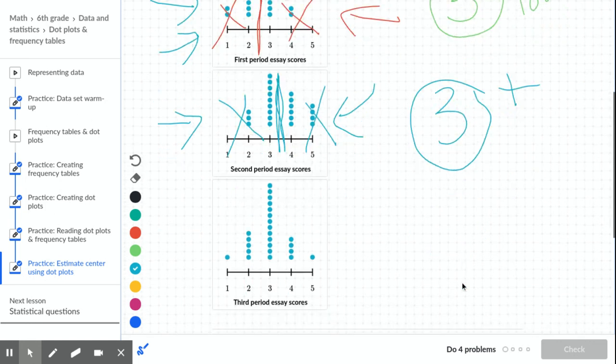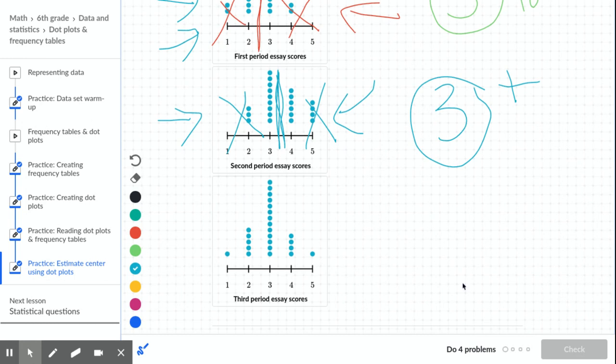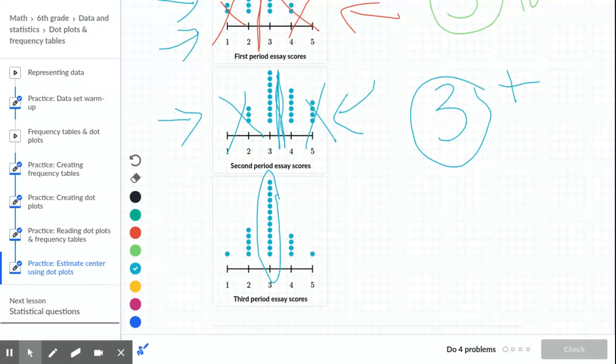And then the last one, it looks like this one. I am pretty confident just looking at this one that the typical score is a three. It's the tallest bar. It's like right in the middle. There's about the same number of dots on either side.